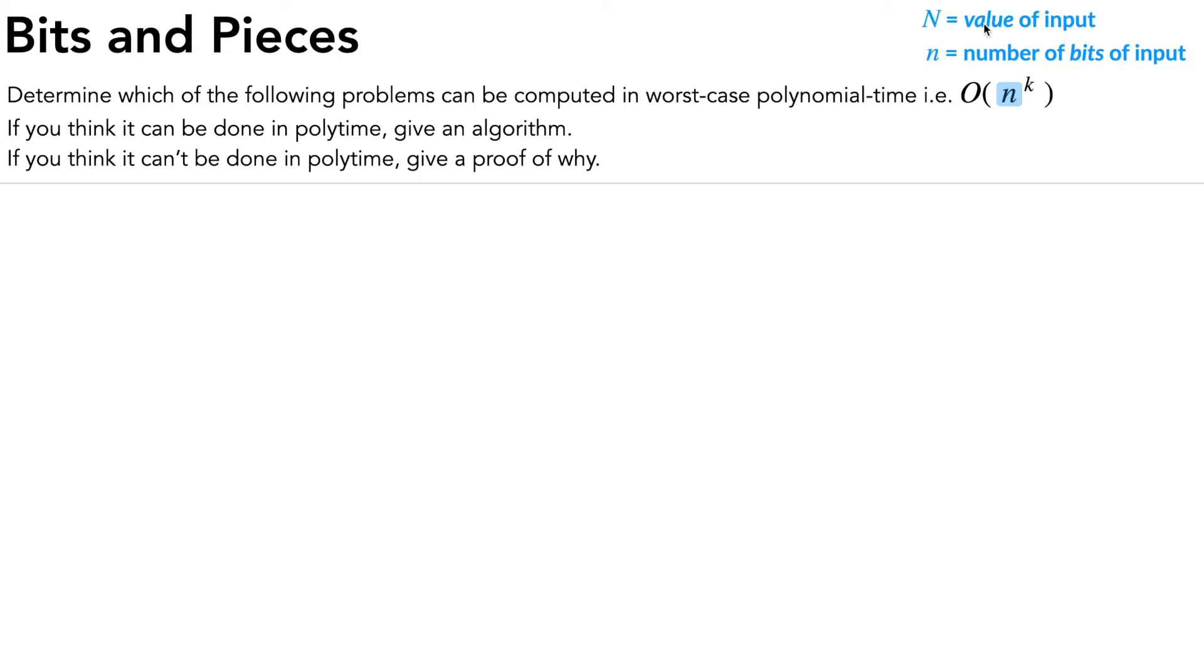A lot of times, especially in other classes, we often are referring to this n when we do O of n calculations. But for this problem, we are explicitly referring to the number of bits in the input. So the relationship between big N and little n is that big N is equal to 2 to the little n, or equivalently, little n is equal to log of big N. With that out of the way, let's get into the problems.